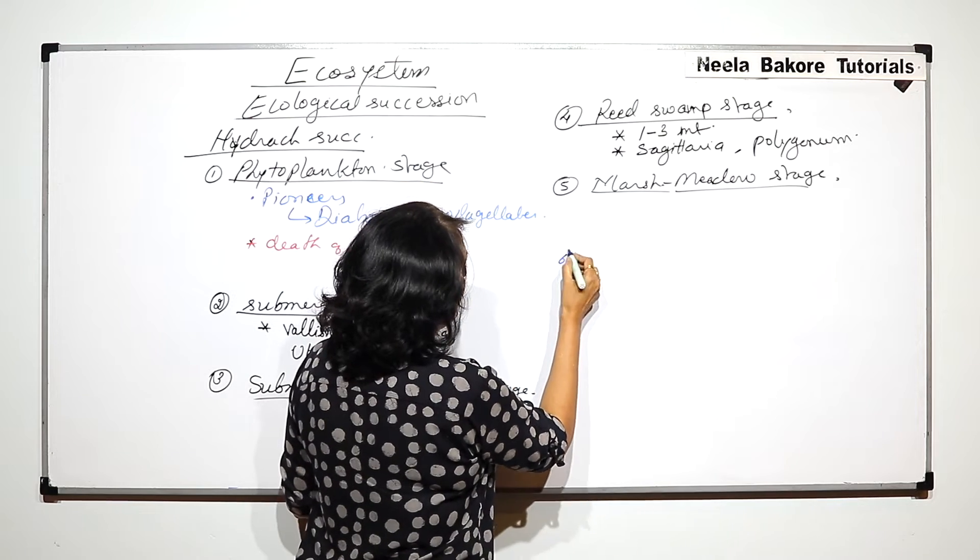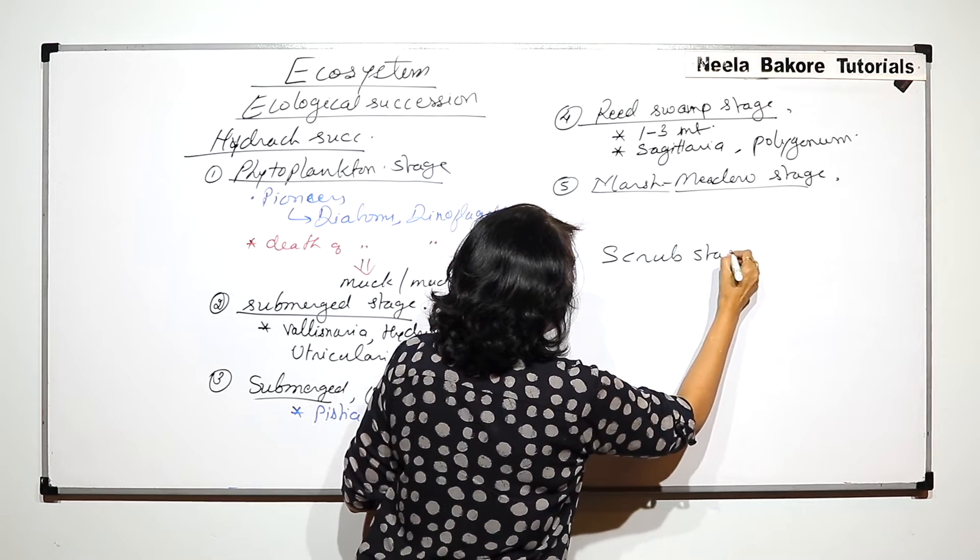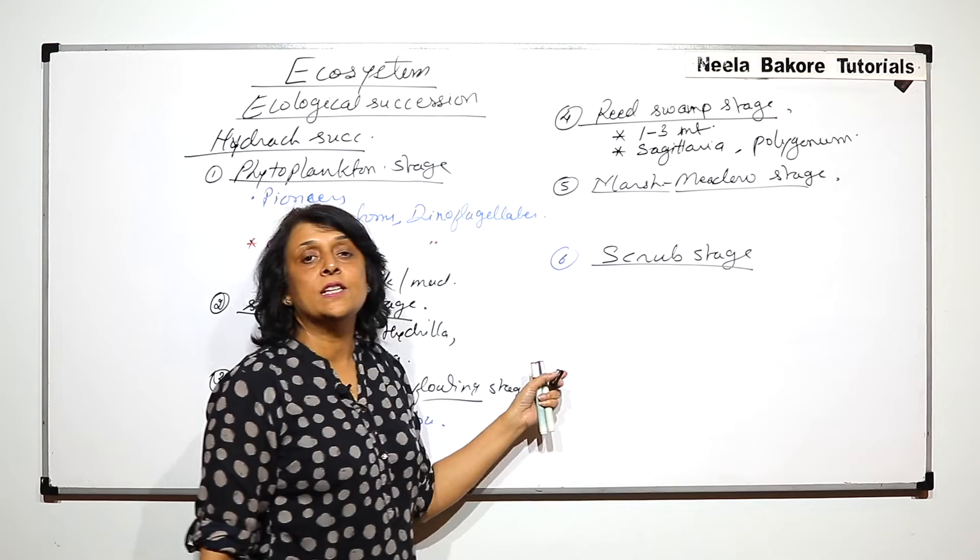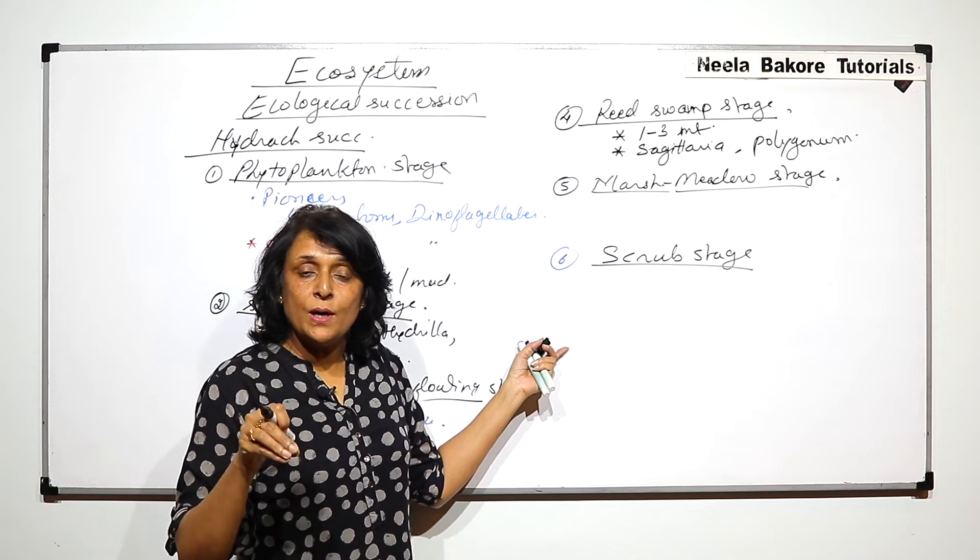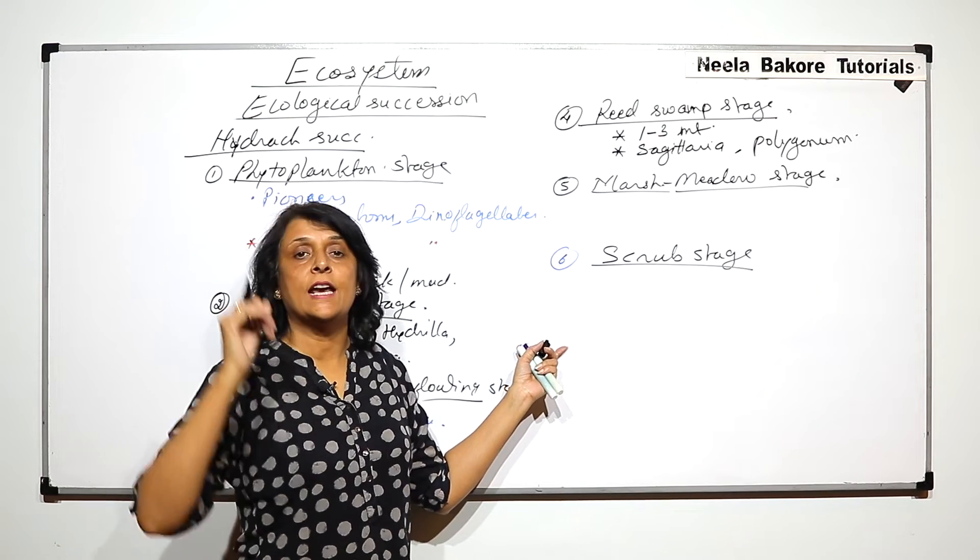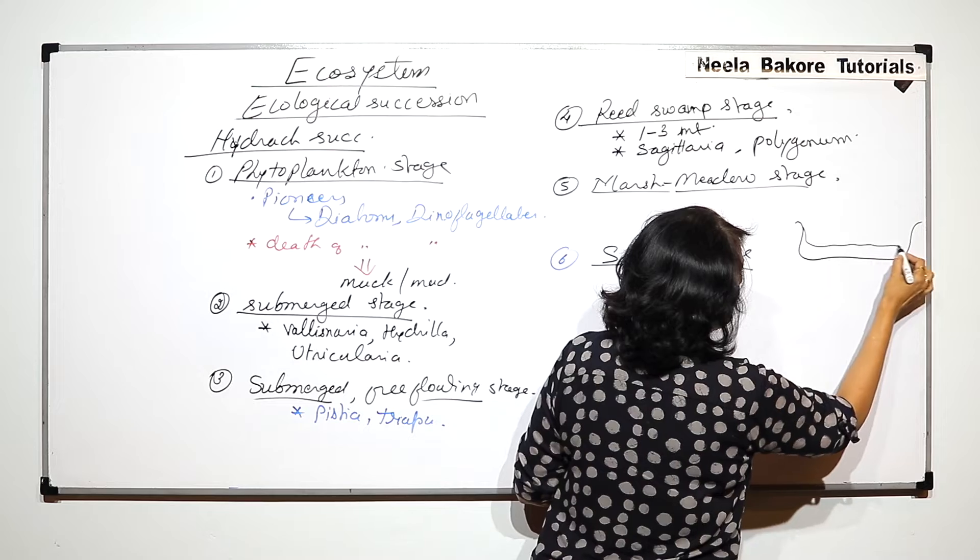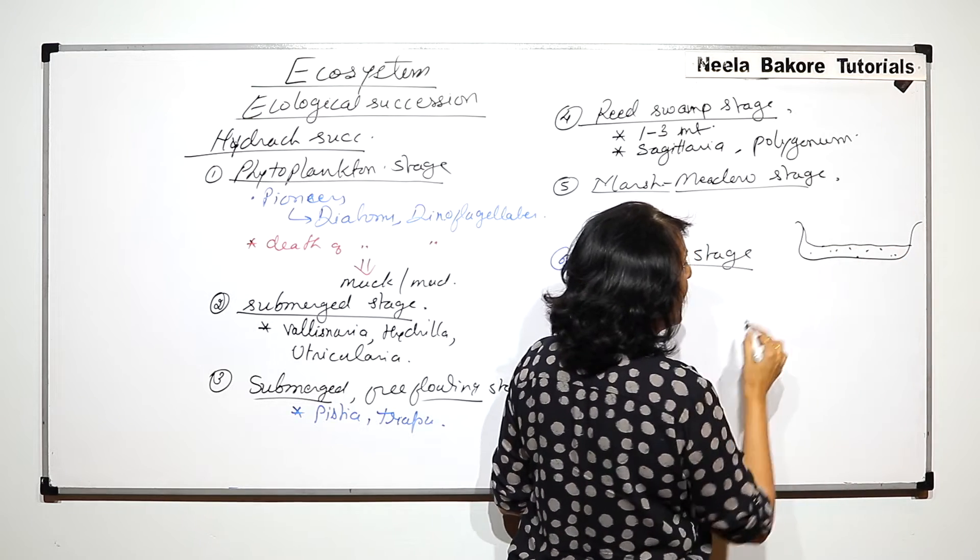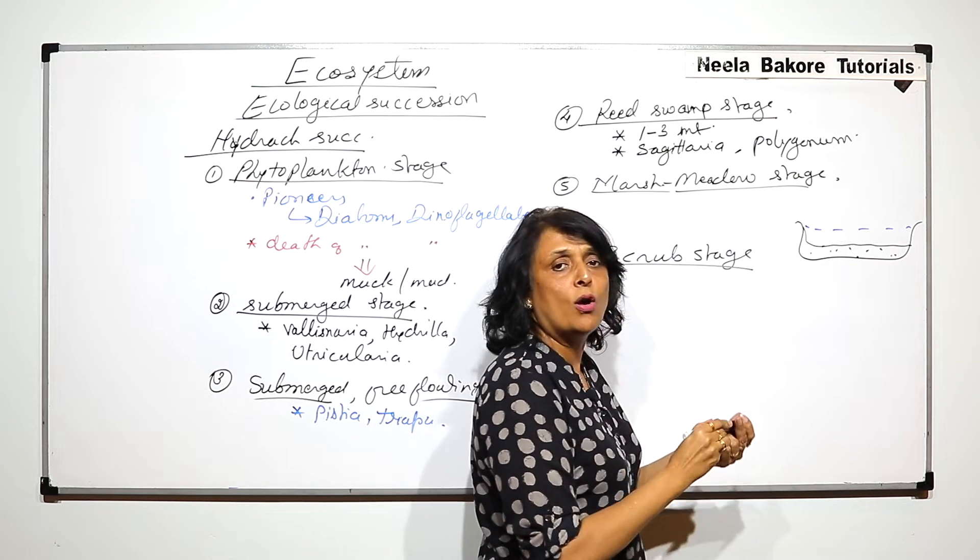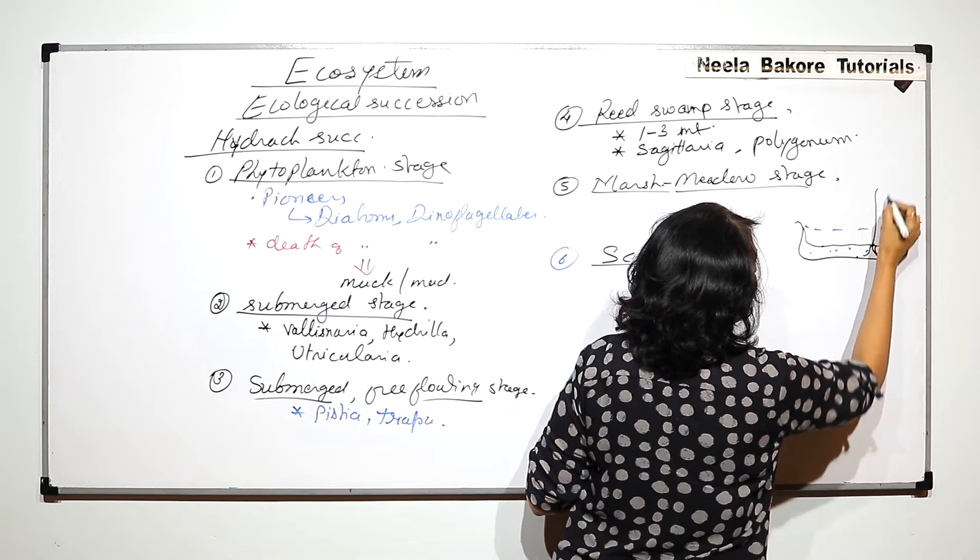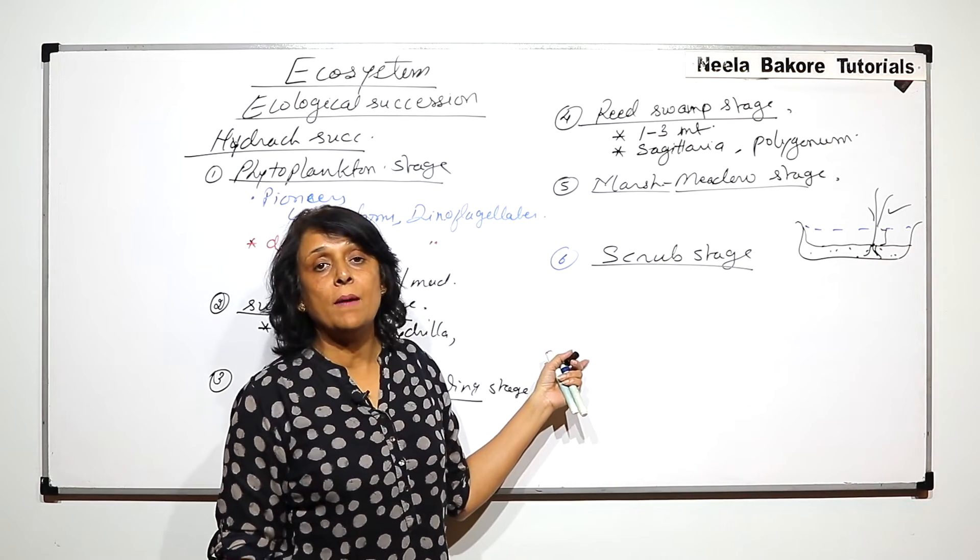Now marsh meadow stage and the sixth one, the next one is called the scrub stage. In these two stages we will start seeing that the lake becomes so shallow that the plants are submerged but a major part of their body gets exposed. If suppose we draw this water body, this much is going to be all this mud deposition, organic matter and if this is the water, these plants would be small tree kind of plants. They would be rooted here and some part of their body will remain submerged and a major part of their body will become exposed.